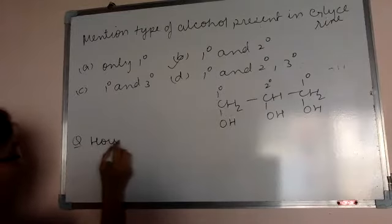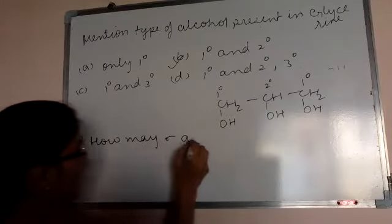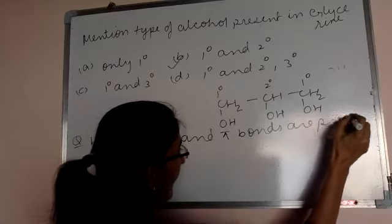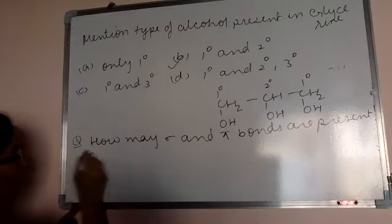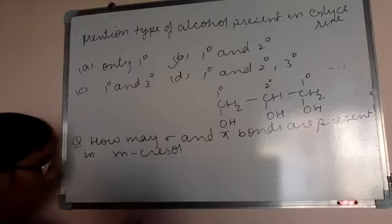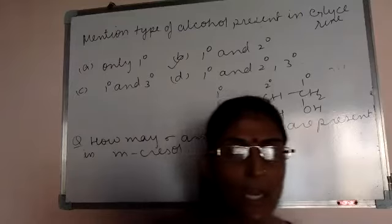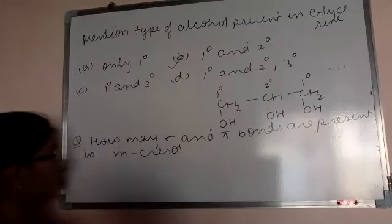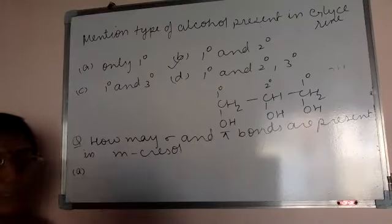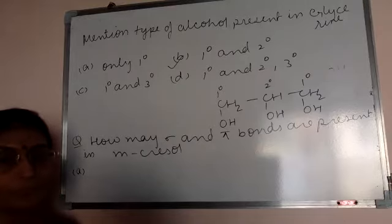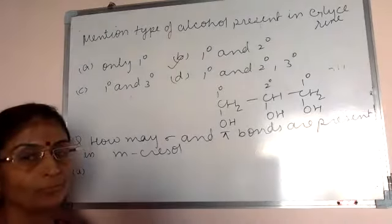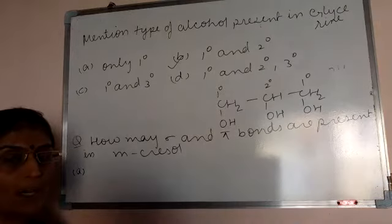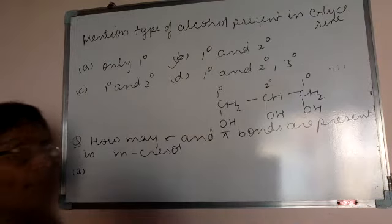Next question: how many sigma and pi bonds are present in metacresol? What is the structure of metacresol? Metacresol has an alternate double bond benzene ring with OH and a methyl group.